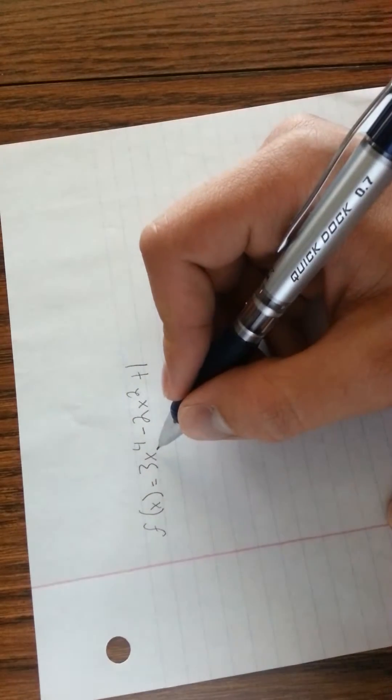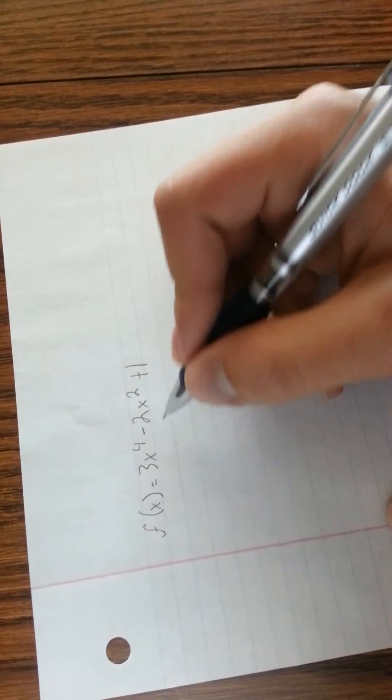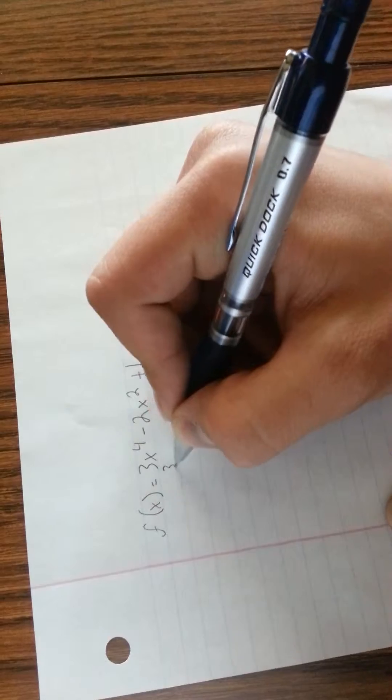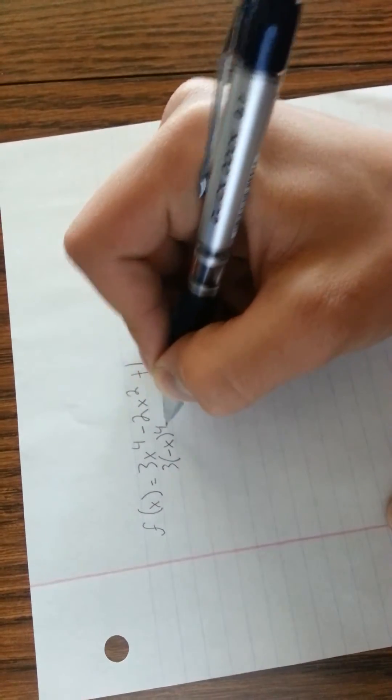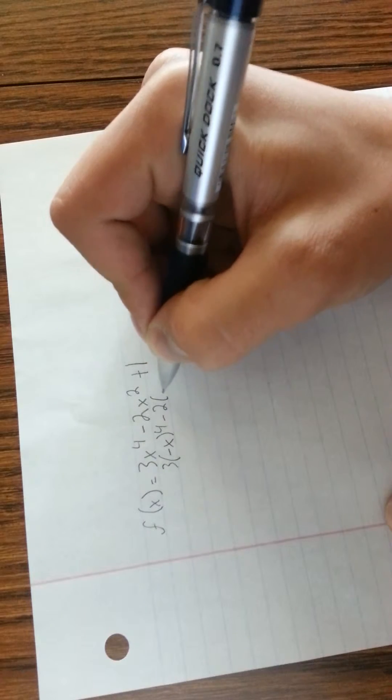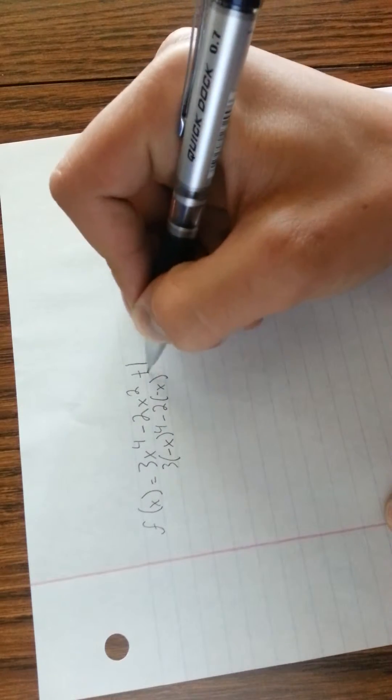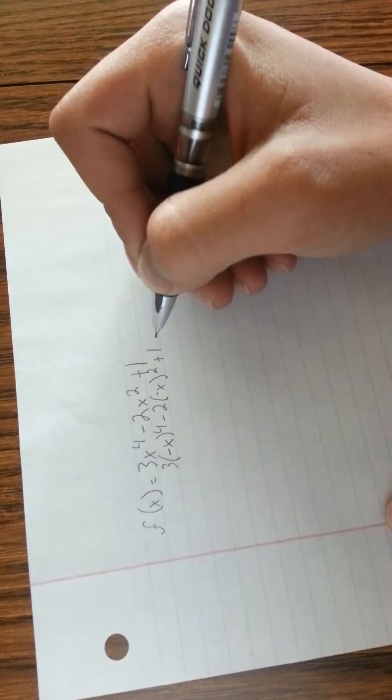So all you have to do is start off with your problem, and we need to change all the x's to negative. So go ahead and do that: 3(-x) to the 4th minus 2(-x) squared plus 1.